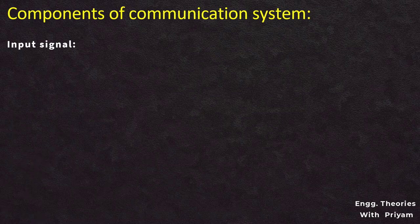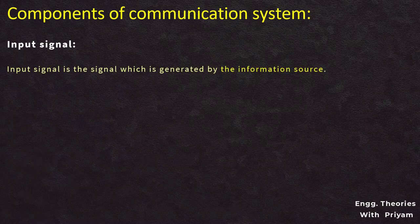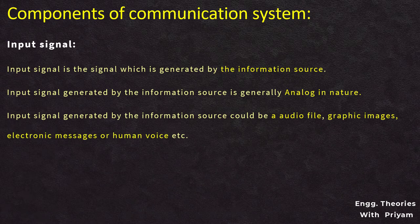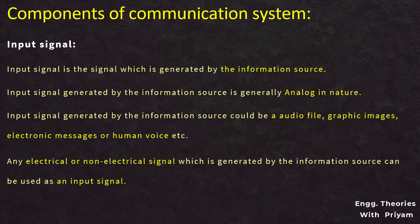The input signal is the signal generated by the information source, and it is generally analog in nature. Input signals generated by the information source could be an audio file, graphic image, electronic messages, or human voice. Any electrical or non-electrical signal generated by the information source can be used as an input signal.